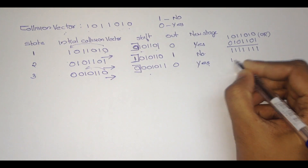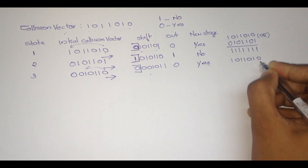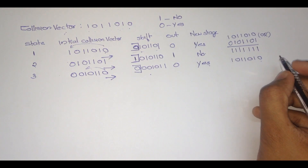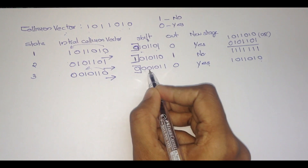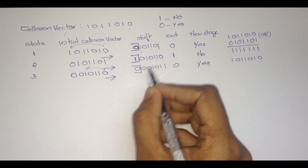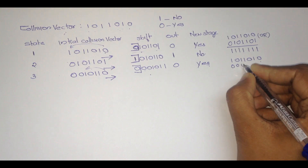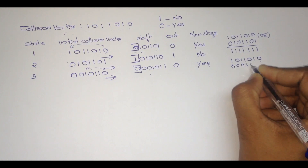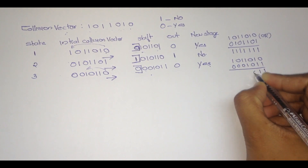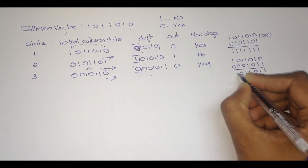The initial collision vector is 1, 0, 1, 1, 0, 1, 0, and the shifted value is 0, 0, 0, 1, 0, 1, 1. Therefore we have to perform an OR operation with these values. The result becomes: 1, 1, 0, 1, 1, 0, 1.